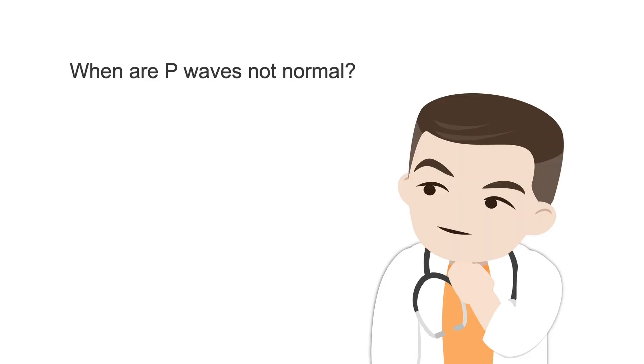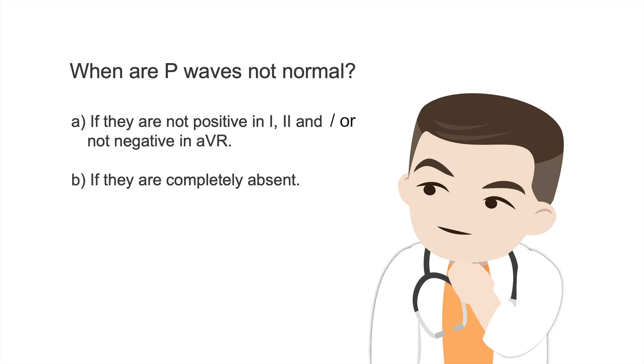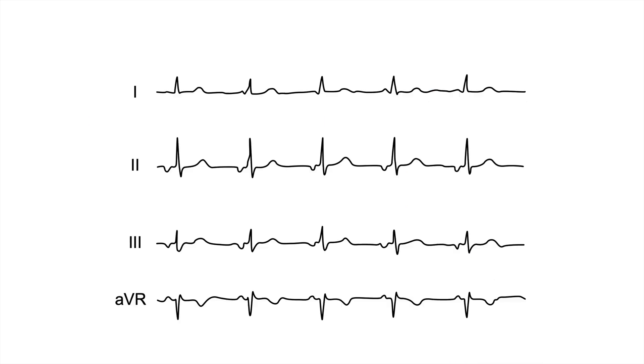Now let's look at a situation when P waves are not normal. Well, first of all, P waves are not normal if they're not positive in leads 1 and 2 or not negative in AVR. And they're also not normal if P waves are completely absent. Let's have a look at situation A for a moment. Look at this example.